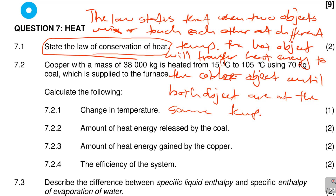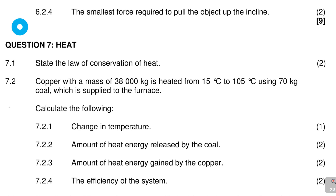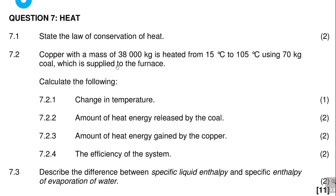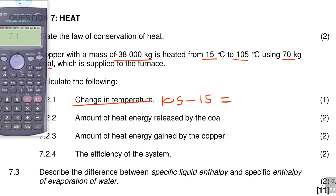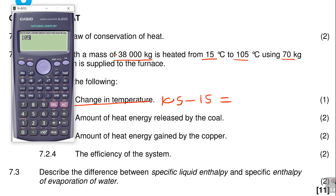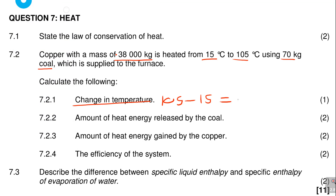Alright, let me erase that. Question 7.2: copper with a certain mass is heated from 15 to 105 degrees using 70 kg of coal supplied. Find the change in temperature. That's not a hard problem — the change in temperature is 105 minus 15, which equals 90 degrees.